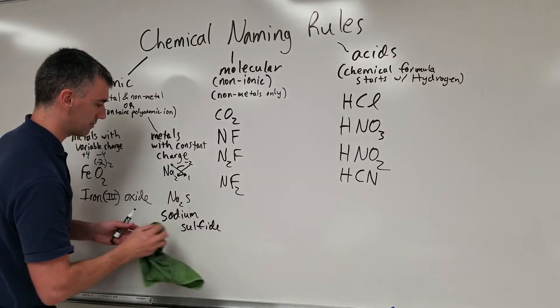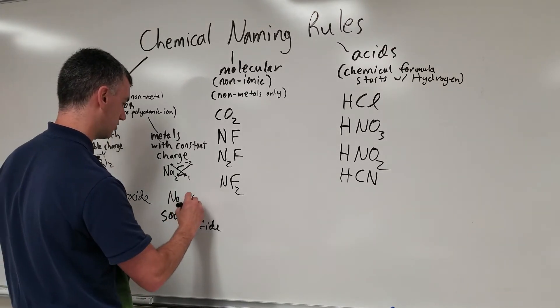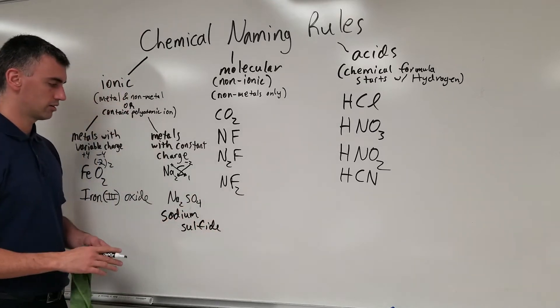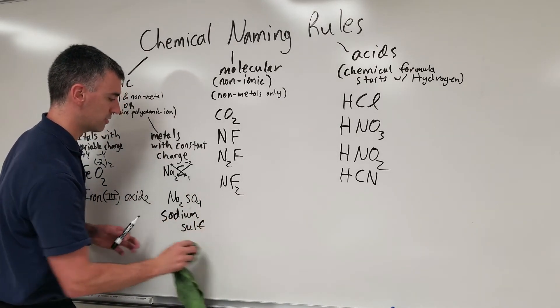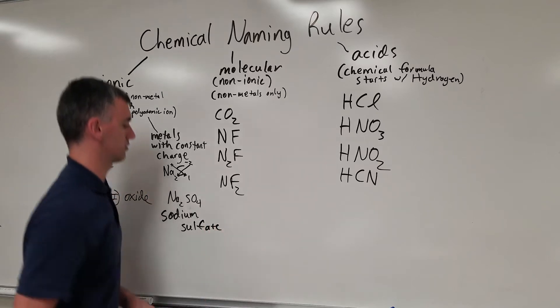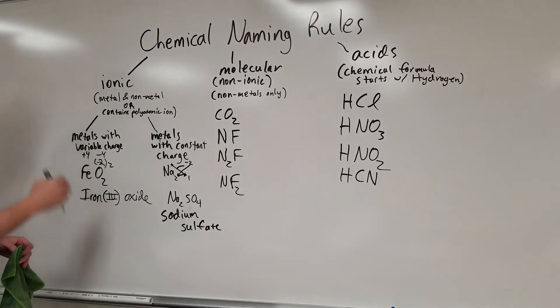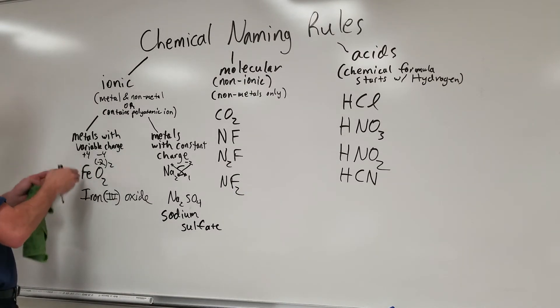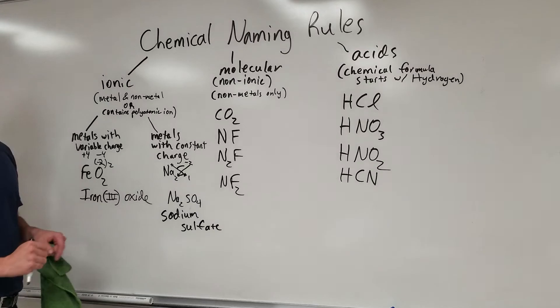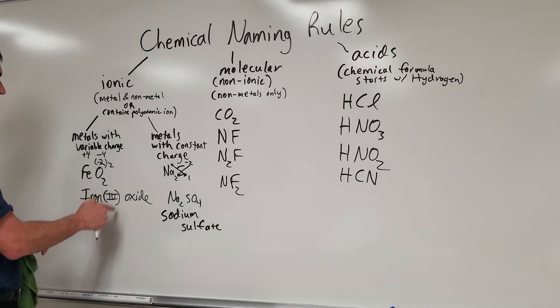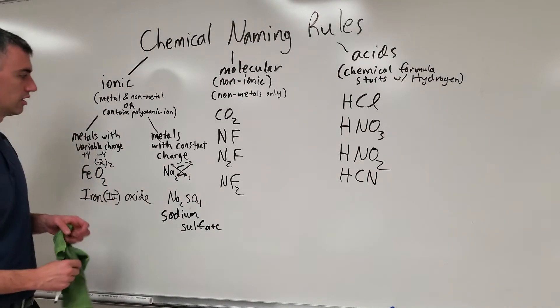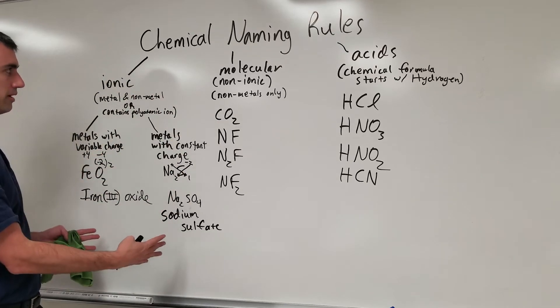Even if it's a polyatomic ion, what if I did Na2SO4? That just makes it sodium sulfate. As opposed to this, if I use iron, if I had iron paired with sulfate, I'd have to have iron, Roman numeral, and then sulfate in the name. Just make sure Roman numerals are variable charge only. So that's for ionic compounds.